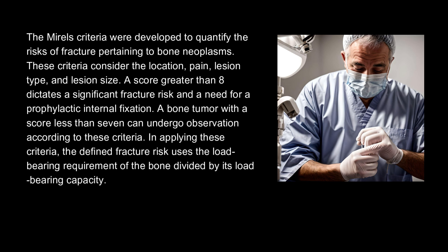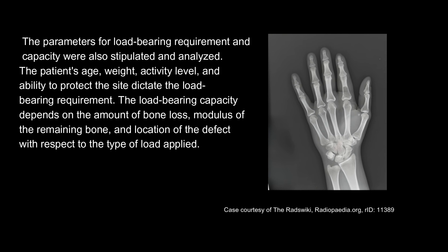The MIRALS criteria were developed to quantify the risks of fracture pertaining to bone neoplasms. These criteria consider the location, pain, lesion type, and lesion size. A score greater than 8 dictates significant fracture risk and the need for prophylactic internal fixation. A bone tumor with a score less than 7 can undergo observation. The defined fracture risk uses the load-bearing requirement of the bone divided by its load-bearing capacity. The patient's age, weight, activity level, and ability to protect the site dictate the load-bearing requirement. The load-bearing capacity depends on the amount of bone loss, modulus of the remaining bone, and location of the defect with respect to the type of load applied.